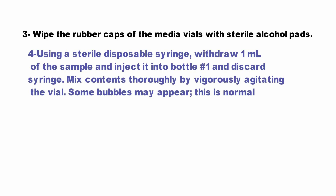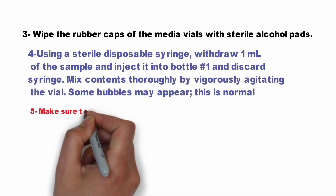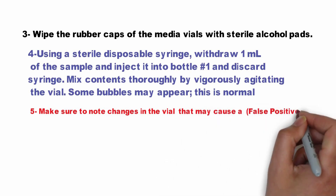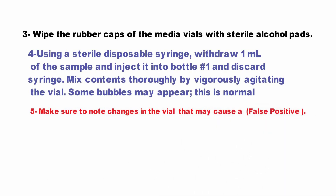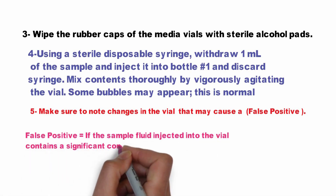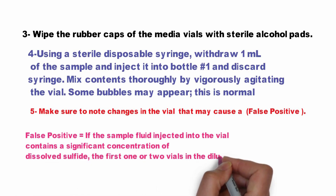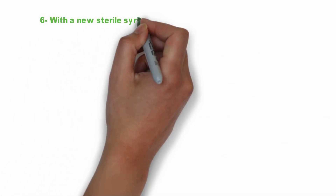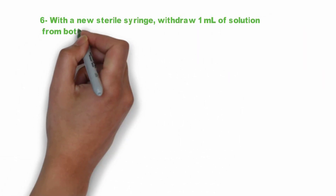Some bubbles may appear and this is normal. Make sure to note down any change in the vial that may cause a false positive. A false positive means that if the sample fluid injected into the vial contains a significant concentration of dissolved sulfide, the first or second vials in the dilution series may turn black.